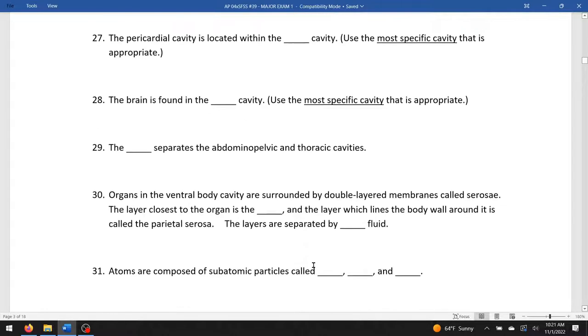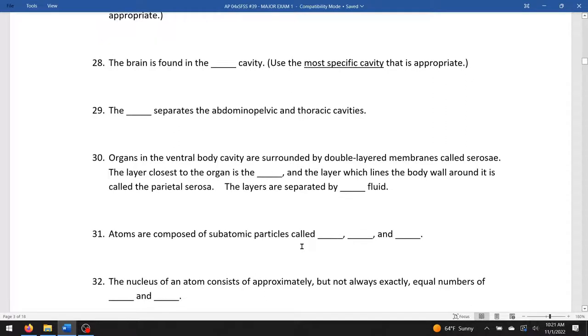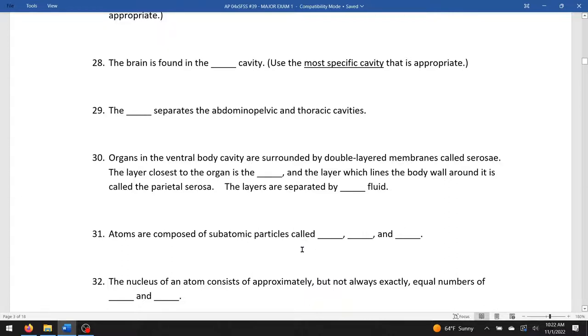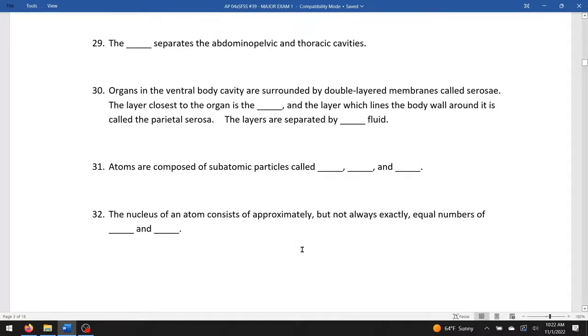Atoms are composed of subatomic particles called protons, neutrons, and electrons. The nucleus of an atom consists of approximately, but not always, an equal number of protons and neutrons.